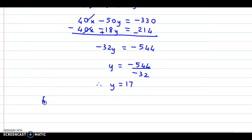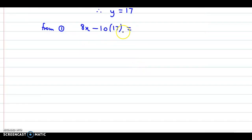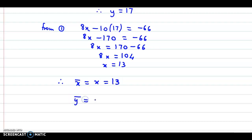From equation number 1, we can find x's value. 8x minus 10y, where y is 17, equals minus 66. So 8x minus 170 equals minus 66. 8x equals 170 minus 66, which is 104. So x equals 104 divided by 8, that would be 13. Therefore, x bar is 13 and y bar is 17.